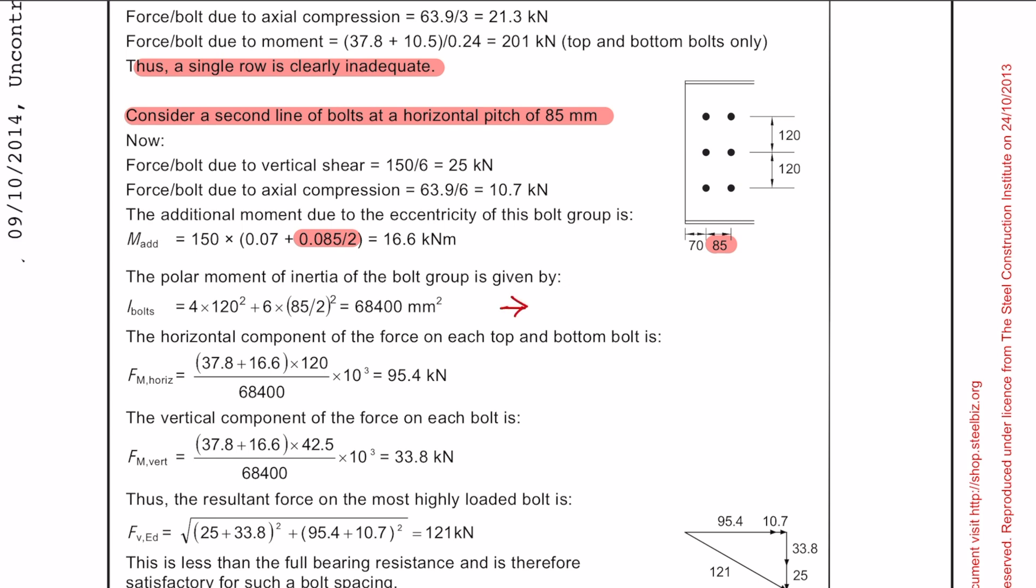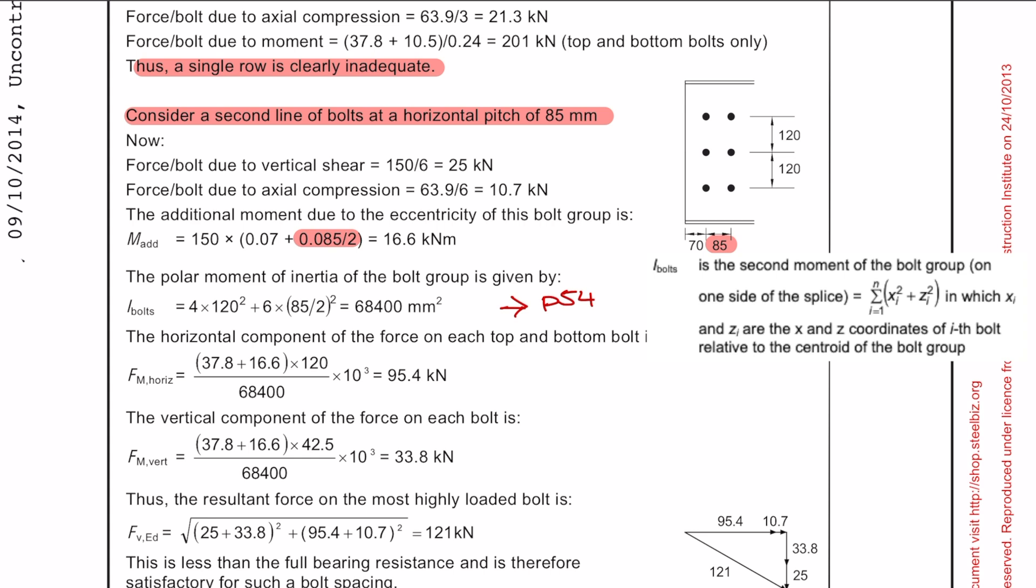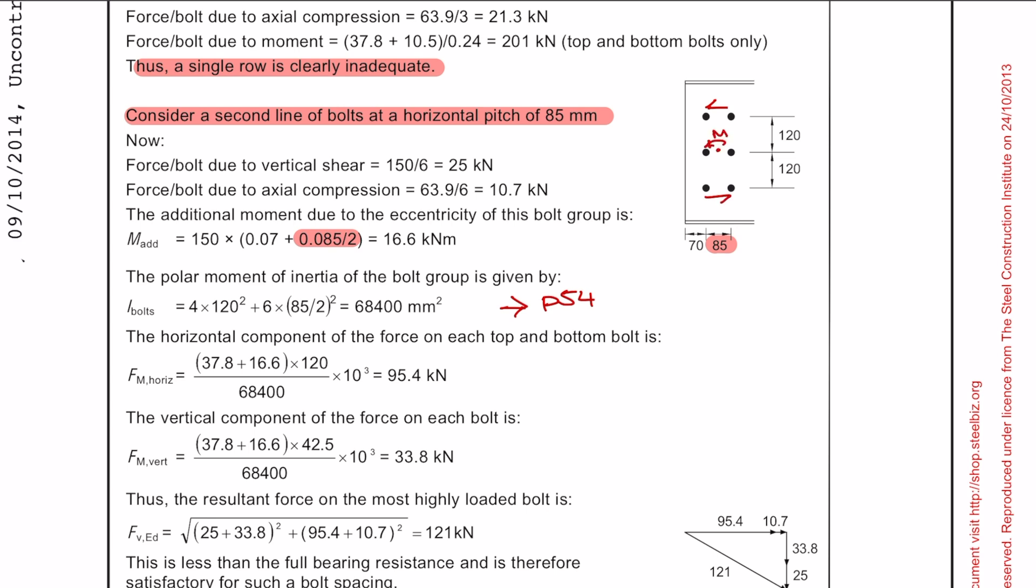So next we have to work out something called the polar moment of inertia of the bolt group. And it's defined a little bit better on page 54 of the same document. So next we need to work out the horizontal and vertical component of the force on each bolt. So if you imagine that the bending moment is acting in the center of the bolt group, you're going to get horizontal and vertical forces on the outermost bolts.